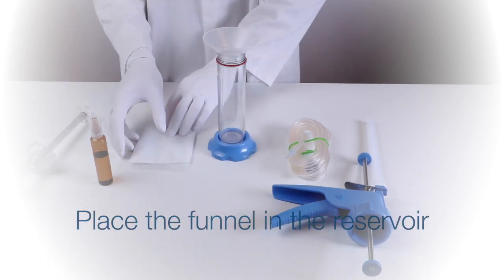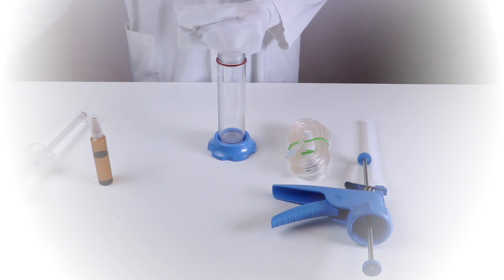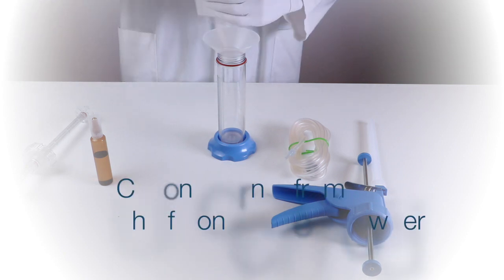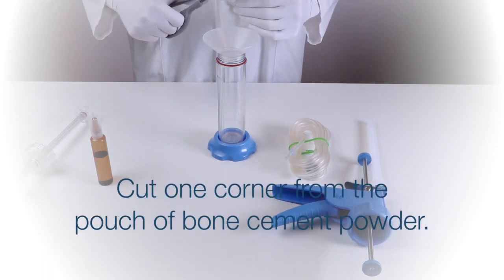Place the funnel in the reservoir. Cut one corner from the pouch of bone cement powder.